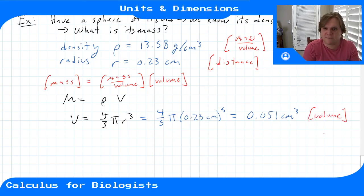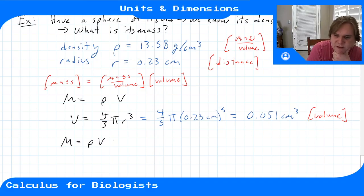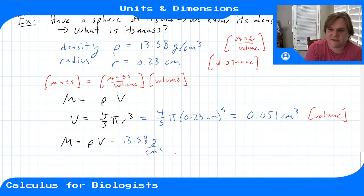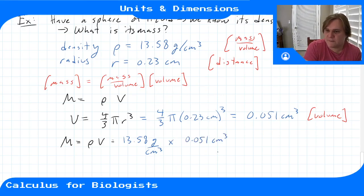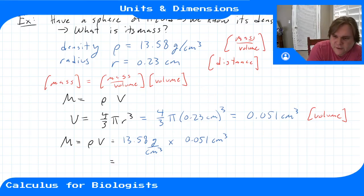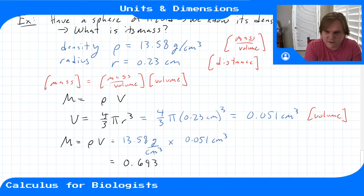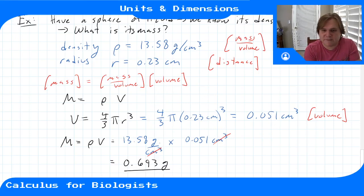Now we can compute total mass by multiplying density times volume: m = ρ × V = (13.58 g/cm³) × (0.051 cm³). Multiply the numbers: 0.63. Check units: grams stays, cm³ cancels with cm³, leaving grams. So the mass of the mercury drop is 0.63 grams. That's the general process when converting between units and dimensions.